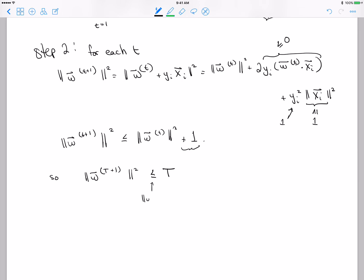Remember, that takes into account the fact that W times 0 is actually equal to 0, and it grew no more than 1 at every iteration, so at time T+1 it equals T. What that means is that this norm is at most root T. So that's the second step.